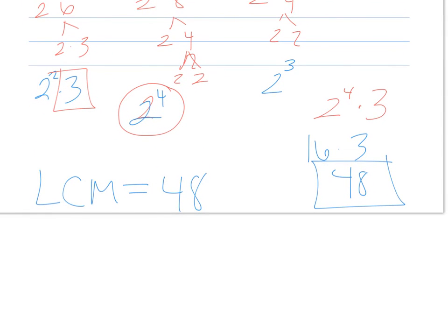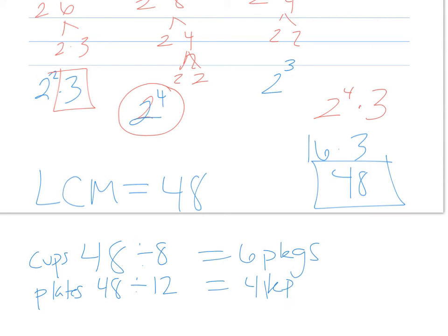If we were to find the number of packages that Lucy needs to buy, we are going to divide 48 by the amount in each package. For cups, 48 divided by 8, she needs 6 packages. For plates, 48 divided by 12, she needs 4 packages. And for napkins, 48 divided by 16, she needs 3 packages. So Lucy is going to need 6 packages of cups, 4 packages of plates, and 3 packages of napkins. I got a little messy and I apologize, but hopefully you can do even better than me because you are great.